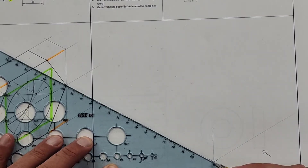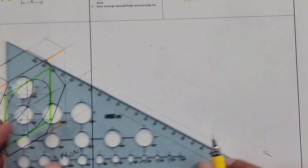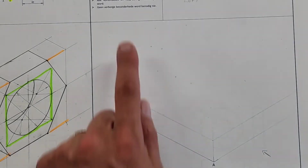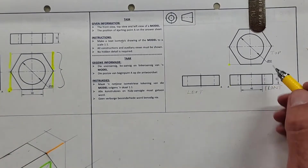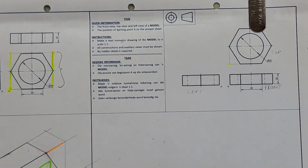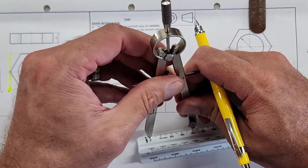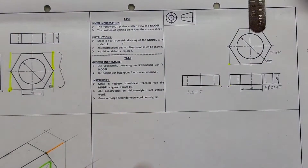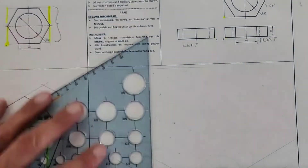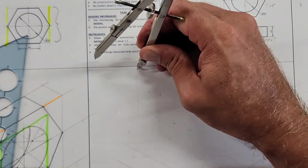These are the construction lines. We know this is where we're going to start. There's a construction line this way and another construction line this way. To get our auxiliary view, we're going to use the top part — we need one of these lengths, and they tell you it's 40. Take your compass, set it on 40, find a line up here, give it a center line in construction, and draw a radius-40 arc.